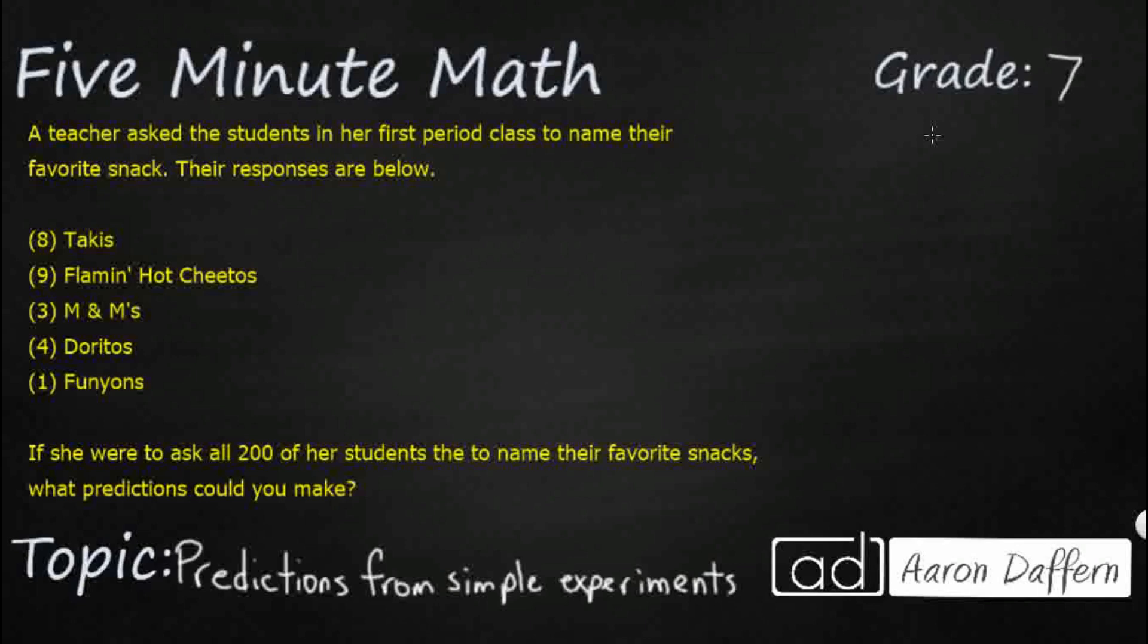So we have a pretty representative sample problem here. A teacher is asking students in her first period class to name their favorite snacks. We have our responses here. So then we're going to use that sample to make a prediction about all 200 of her students. She's not going to make all of her students answer. She's just going to ask a small sample, her first period, and she wants to know if everyone else responded pretty much like that first period class, what kind of predictions could we make?